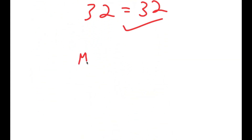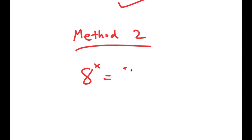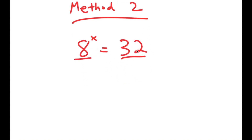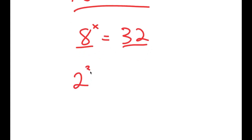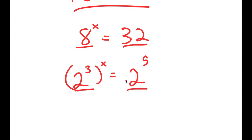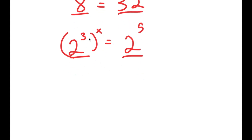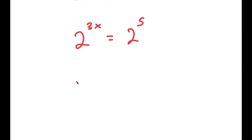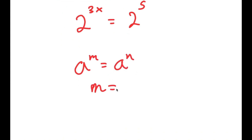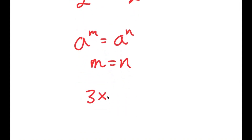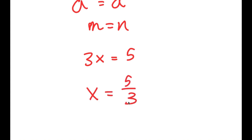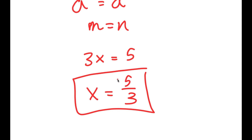This is right. I also have a second method of solving this problem. For the second method, we have the same equation: 8 to the power of x is equal to 32. I'm going to rewrite these two numbers — 8 as 2 to the power of 3, and 32 as 2 to the power of 5 — giving them the same base, which makes it much easier to solve. 2 to the power of 3x equals 2 to the power of 5. Because the bases are the same, 3x equals 5, and x equals 5 over 3.